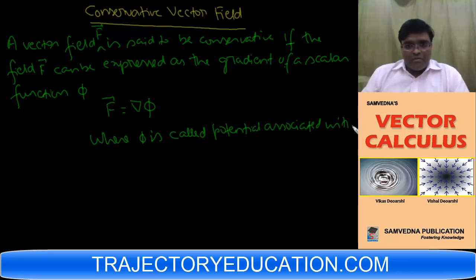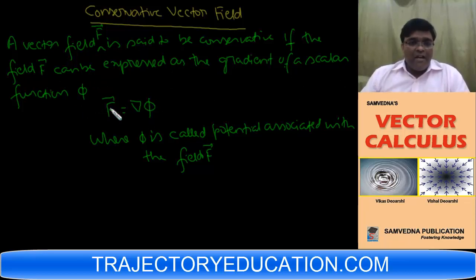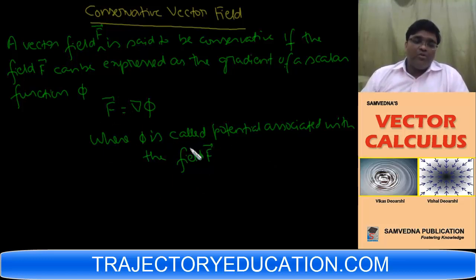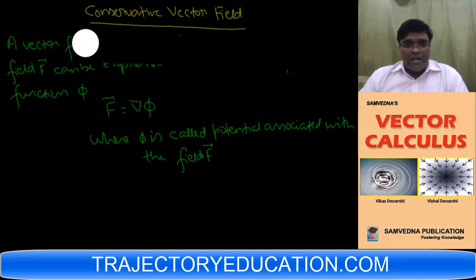So a vector field F is said to be conservative if F can be expressed as the gradient of a scalar function Phi — that is, if there exists a Phi corresponding to F such that F equals del Phi. I'll tell you what consequences and properties follow from this definition.